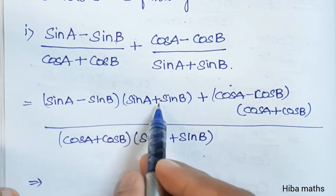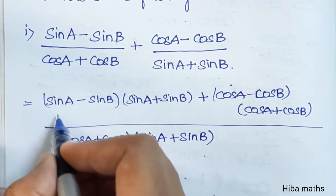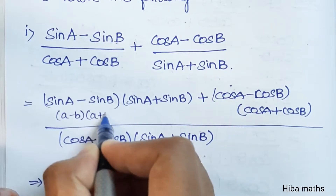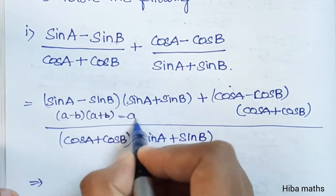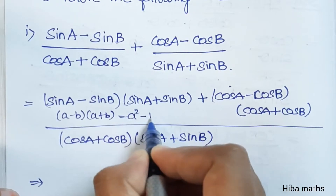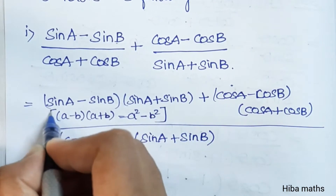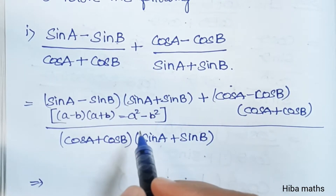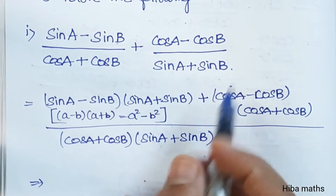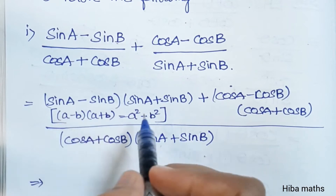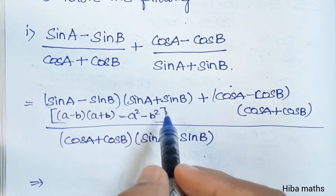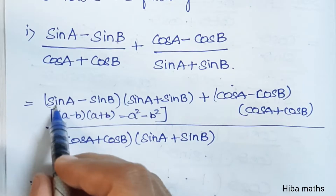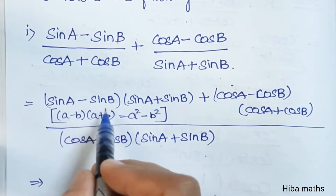sinA minus sinB times sinA plus sinB — what format is this? It is (a minus b)(a plus b), which equals a squared minus b squared. So we change it to that form: sinA times sinB gives sin squared A minus sin squared B.